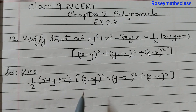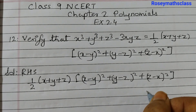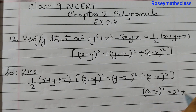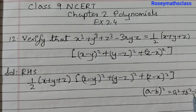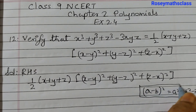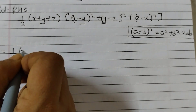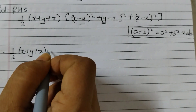Now we know that for x minus y squared we can use the identity a minus b whole squared, which is a squared plus b squared minus 2ab, or a squared minus 2ab plus b squared. This is the identity that we will use, equals to 1 by 2 into x plus y plus z, and then we will open up the brackets.